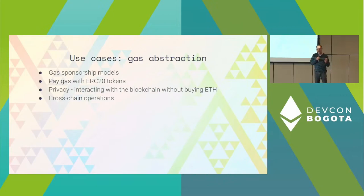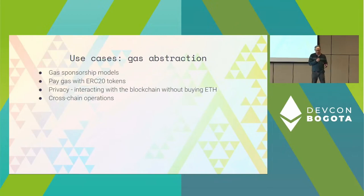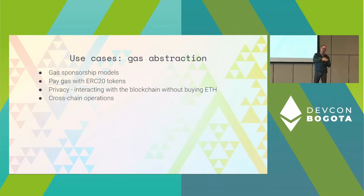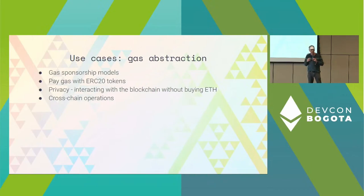Cross-chain operations: since we're abstracting gas and you have a contract that can pay for its own deployment, you can think about performing operations on multiple networks. You are on one network and can pay there, but you want to use your account on other networks. It's possible to create a paymaster mechanism so you can perform operations on other networks using your signature—you approve the transactions, acting on those networks without needing any ETH or native token balance on them.